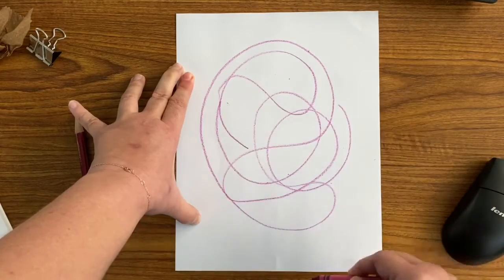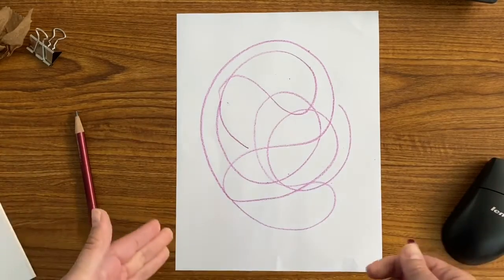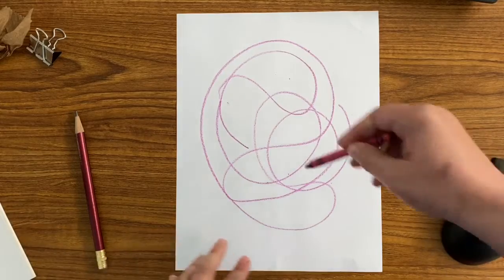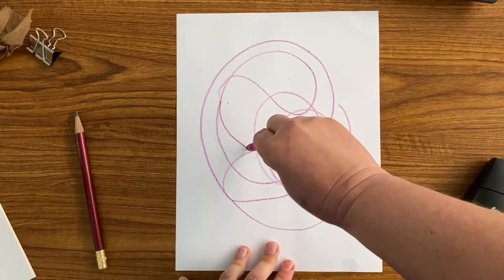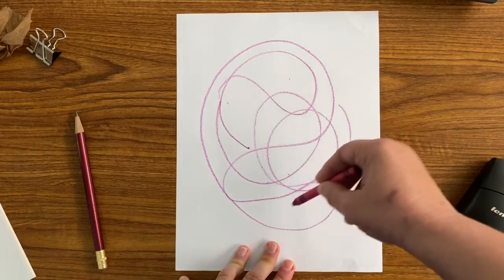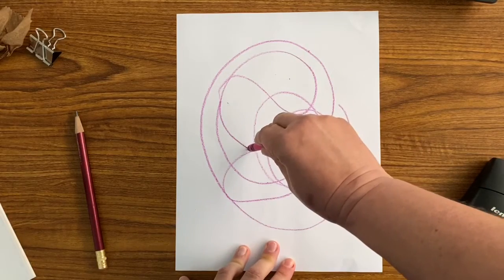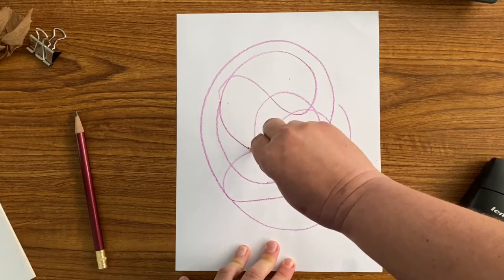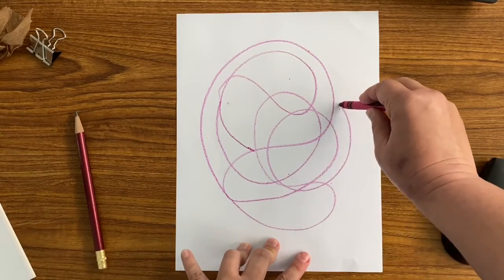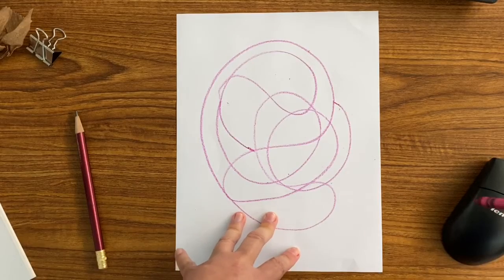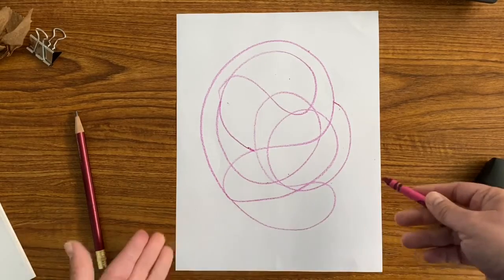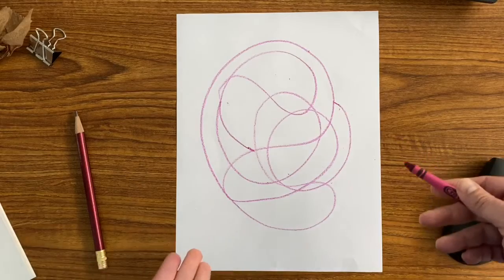With my automatic drawing completed, anything that's not connected I'll just take that line and make it go to the nearest line edge. Now that I have my automatic drawing, I can start coloring.